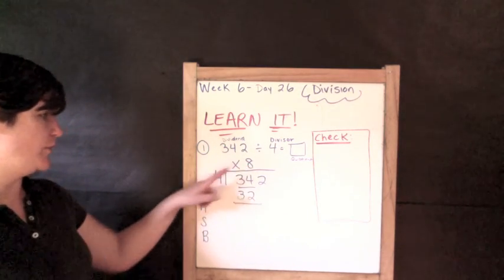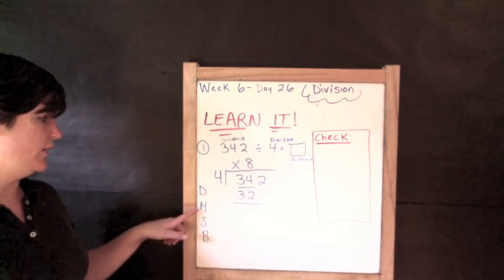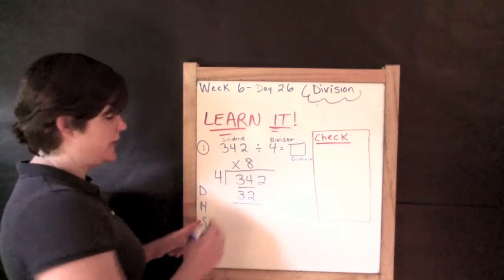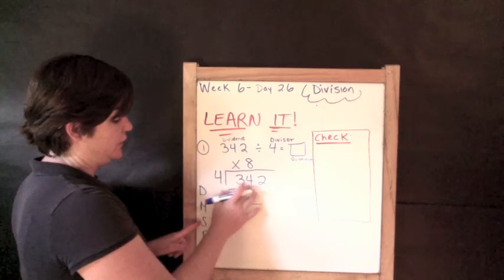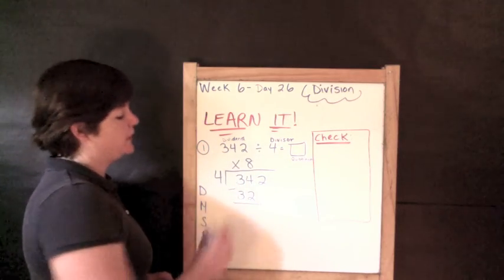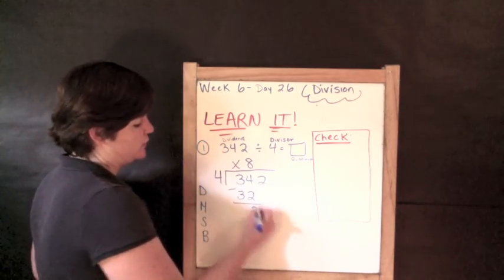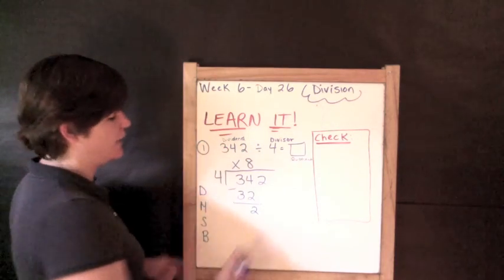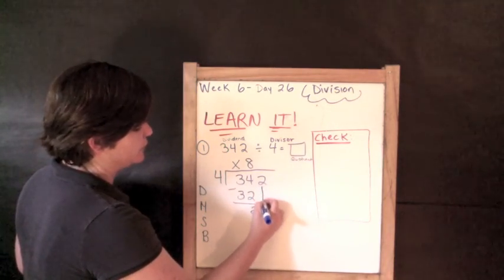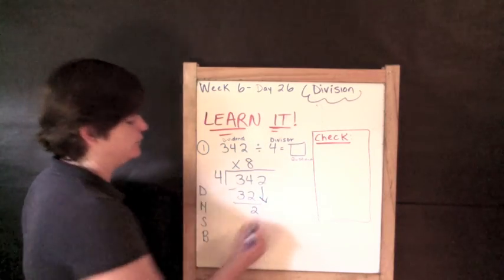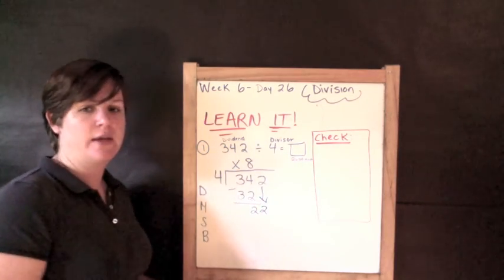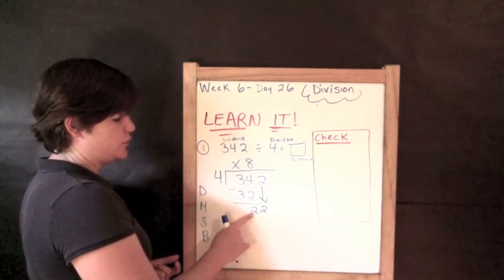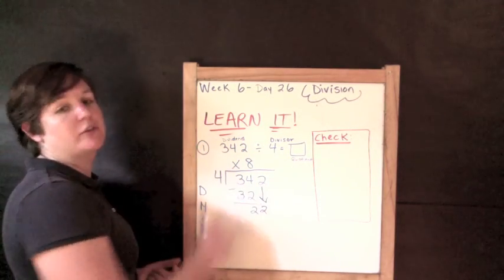S stands for subtract: 34 minus 32 equals 2. B stands for bring down — we take the next digit, which is 2, and bring it down. Now we repeat the process, but this time we're looking at 22 instead of 342.